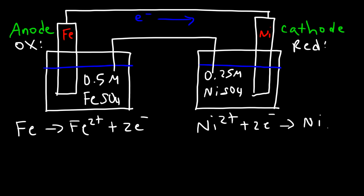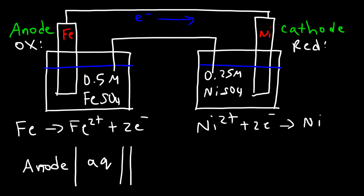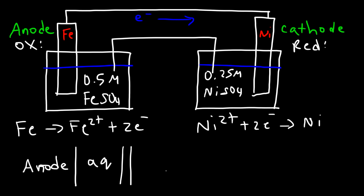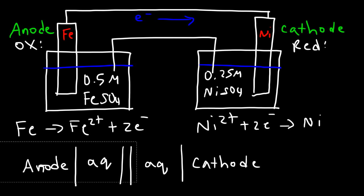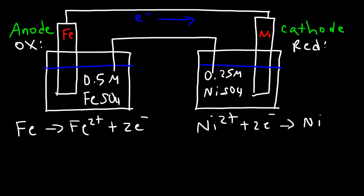Here is the general description for writing cell notation. First, write the anode, then separate it with a single vertical line, followed by the aqueous solution species with their concentration. A double vertical line separates the left half cell from the right half cell. Then write the aqueous species on the right side, and place the cathode all the way on the right.